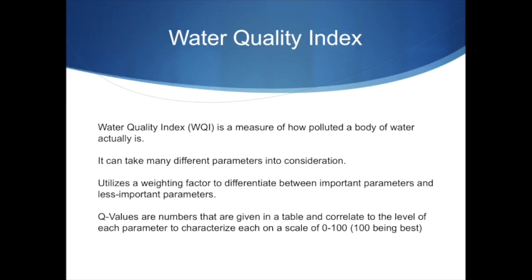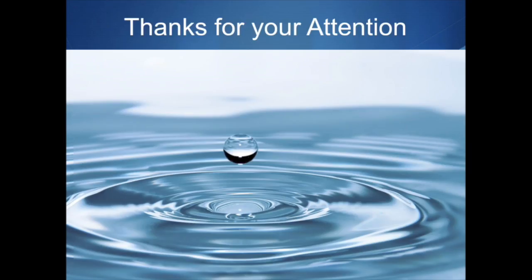The Water Quality Index, or WQI, is a measure of how polluted a body of water actually is. It can take many different parameters into consideration — mainly the ones we discussed previously — to determine the water quality index. The higher the number, the higher the quality of the water. Thanks for your attention.